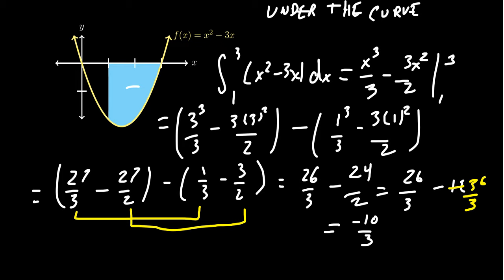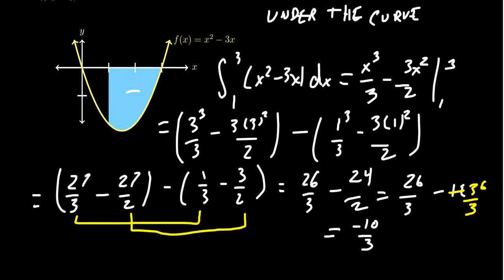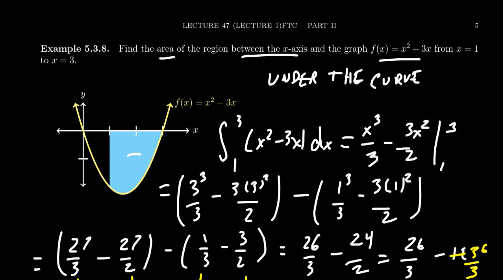That, of course, gives us the integral. We're trying to find the area. So if we want to find the area here, the area is going to equal the absolute value of all that. So we end up with 10/3 right there. Always make your area be a positive quantity.